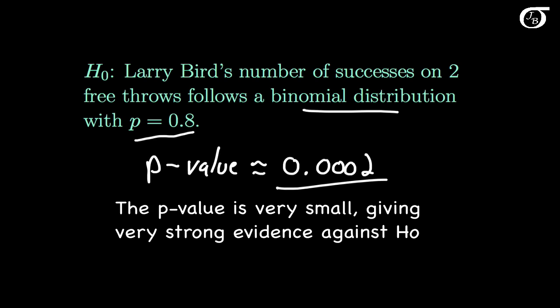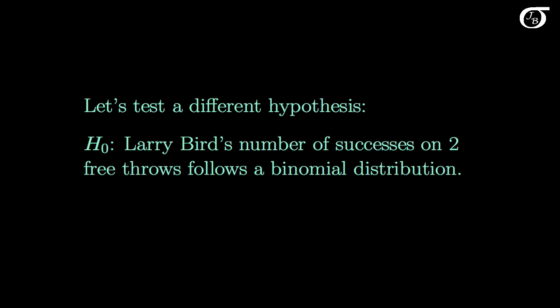In practical problems we often don't have the parameter value specified in the null hypothesis — we often use data to estimate it. So let's look at a slightly different null hypothesis: that Larry Bird's number of successes on 2 free throws follows a binomial distribution, but without a specified value of p. To test this we'll use a very similar method, except we'll use the data to estimate p, with a couple of subtle differences.